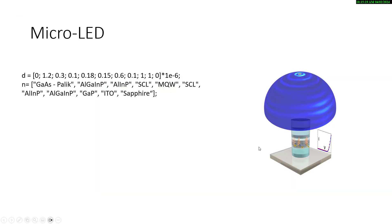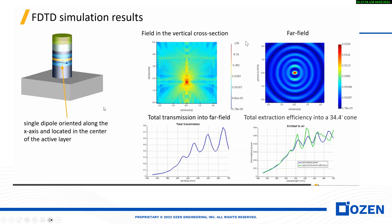This is the micro-LED that I discussed in my previous video. We have different layers — you can see in this part the different thicknesses and parameters. For instance, we have gallium arsenide, aluminium gallium indium phosphide, aluminium indium phosphide, and other layers with their respective thicknesses shown here. With the FDTD simulation, this is the geometry. We can calculate the near field, the far field, total transmission into the far field, and total extraction efficiency within a specific angular range — here it is 34.4 degrees.